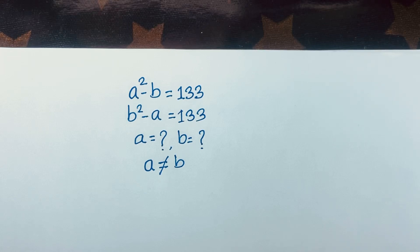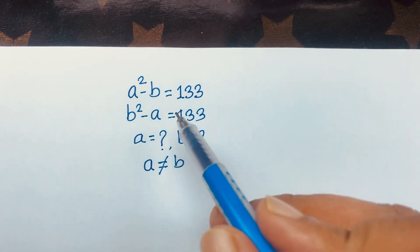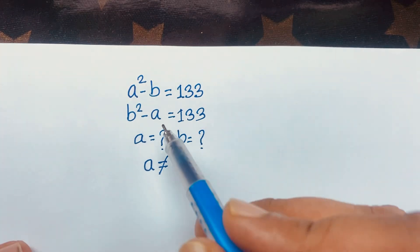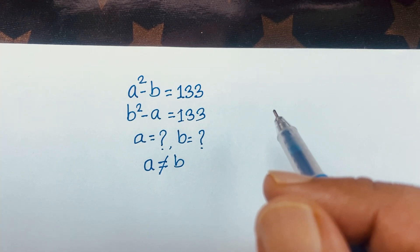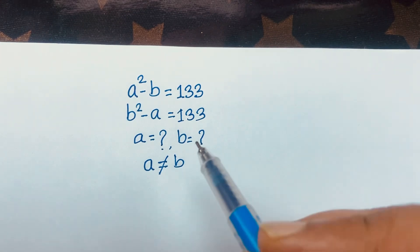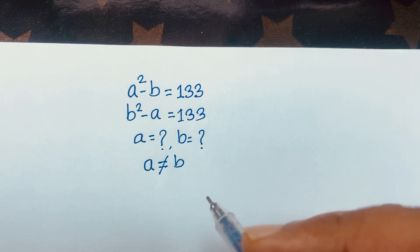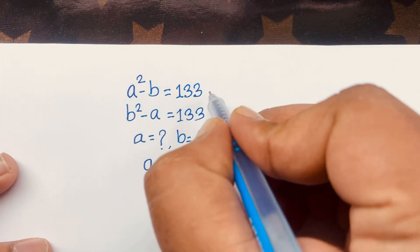Hello everyone. In this video we solve this interesting math question. The question is: a squared minus b is equal to 133, and b squared minus a is equal to 133. We'll find out the value of a and b in this math problem, where a is not equal to b.